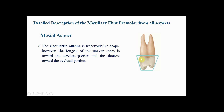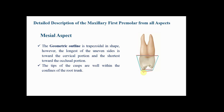The mesial aspect of the maxillary first premolar is characterized by a trapezoidal geometric outline. This trapezoid differs from that found for the facial and lingual surfaces of all teeth in that it is inverted — the longest of the two parallel sides is toward the cervix, while the shortest is near the occlusal surface. This configuration brings the tips of both the buccal and lingual cusps within the confines of the root trunk.